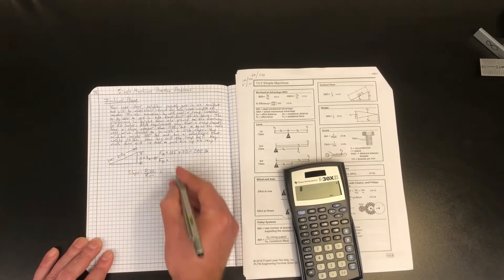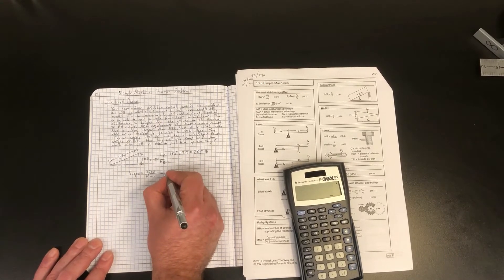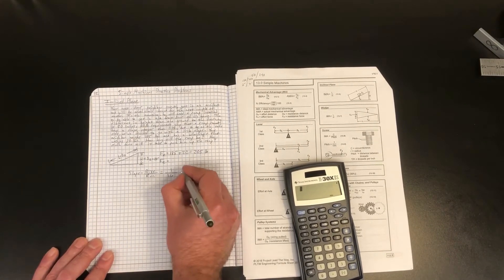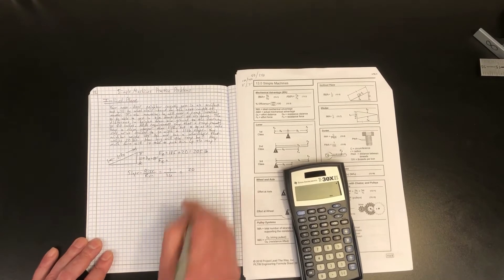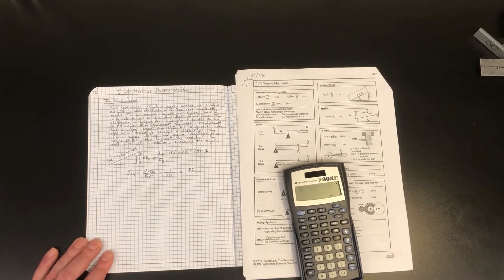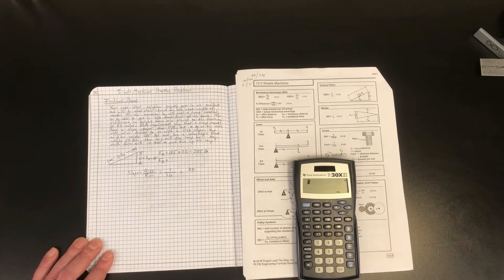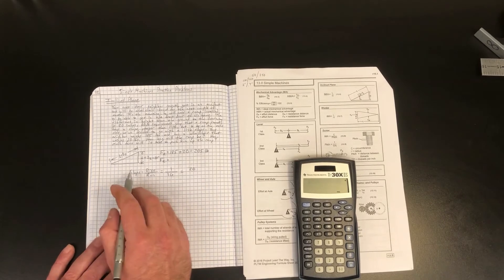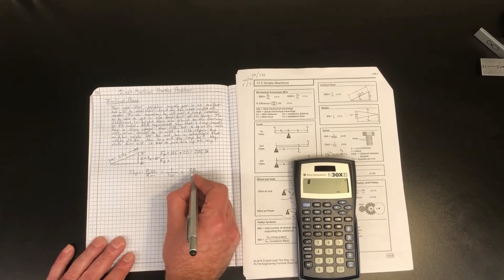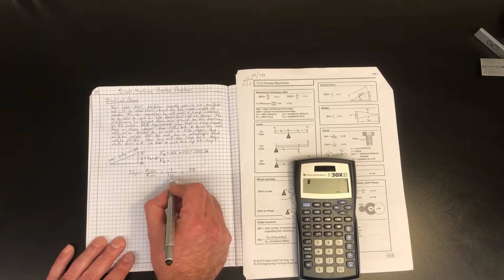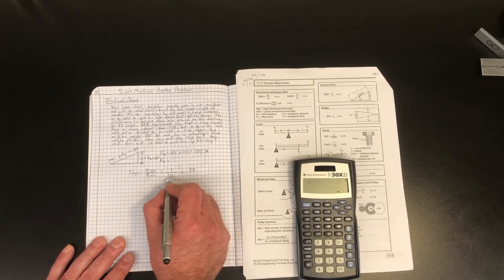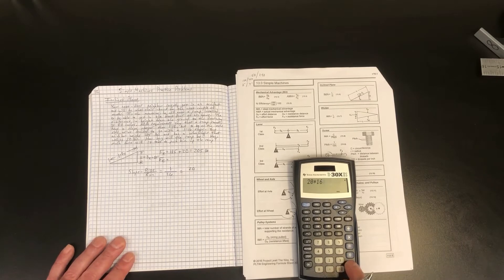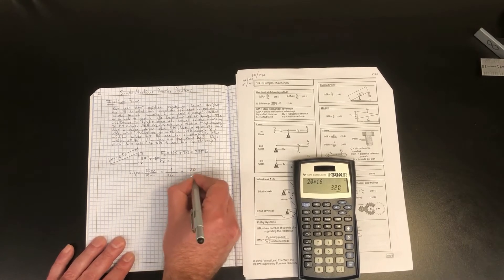In this case, we want a slope of 1 unit of rise to 16 units of run. And we know that the rise, in our case, is 20 inches. So in order to get the length of our ramp here, we need to take 20 inches, and that is equivalent to the 1 unit of rise. And we need to figure out how long it is, so the 16 units of run. So we can simply take 20 times 16, and get our run of 320 inches.